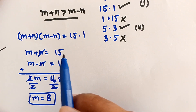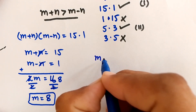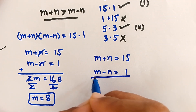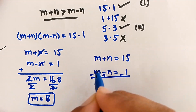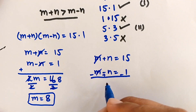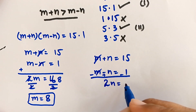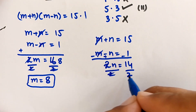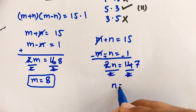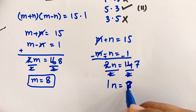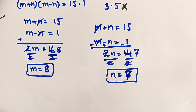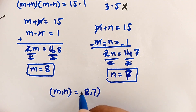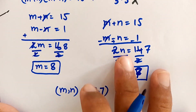To find n, we subtract equation 2 from equation 1. The m terms cancel, giving 2n equals 14. Dividing both sides by 2, n is equal to 7. So from Case 1, m equals 8 and n equals 7.